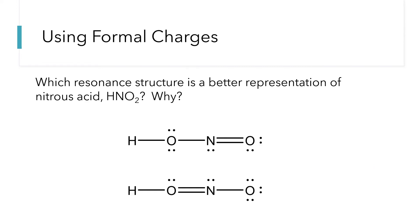This example will illustrate how we use formal charges to determine which of two possible Lewis dot structures is a better representation. Looking at these two structures, all atoms have their octet or duet, so it's hard to just look at them and decide which one is better. For hydrogen in both structures, the bonding is identical, so that won't help us discriminate. For the nitrogens, it's the same deal — there's one single bond, one double bond, and one lone pair in both molecules. So we'll need to calculate the formal charges for all four oxygen atoms, since both oxygens have different formal charges in these two drawings.